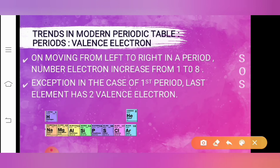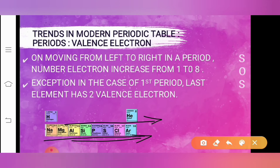Now if we talk about atomic number: when we move from left to right in a period, the atomic number increases. The elements have consecutive atomic numbers when we move from left to right in the periodic table.